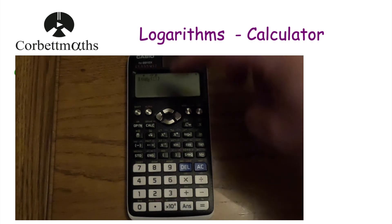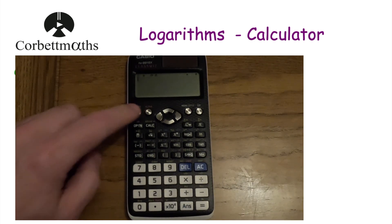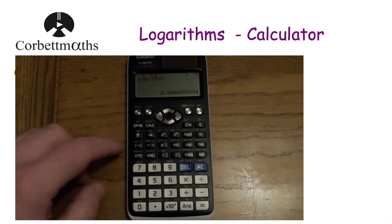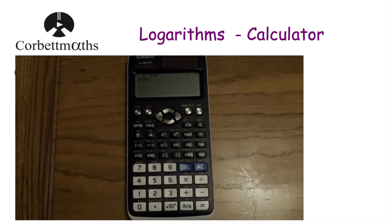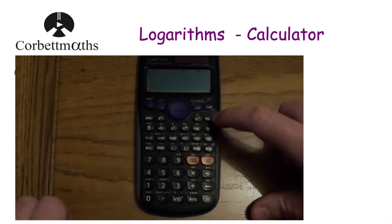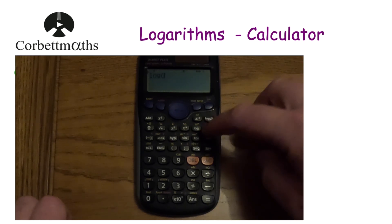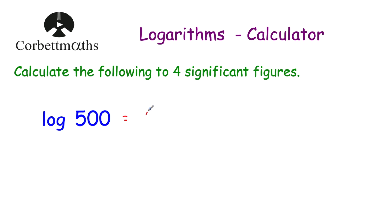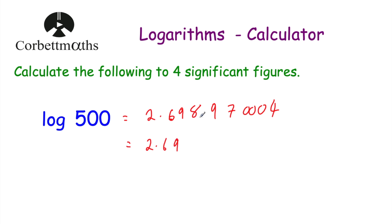In this calculator, if you want to type in the base, press the log button with base and type in the base. But if you want log of 500 directly, press shift and then that button to get log, type in 500, close brackets, and press equals. On another model, there's a separate log with base button and a plain log button, so you don't need to press shift. The answer is 2.698970004, and to four significant figures — rounding: 2.69, then the fourth significant figure is 8 rounding up to 9 — giving 2.699.